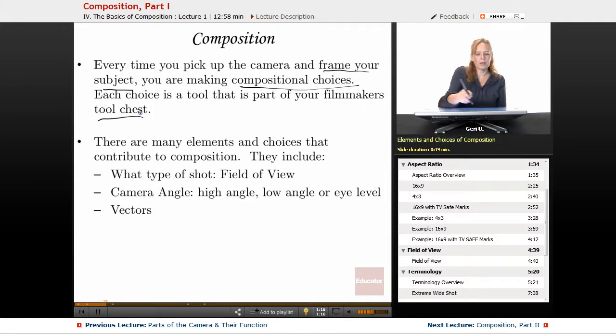There are many elements and choices that contribute to composition. They include primarily what type of shot, which is called field of view, how close or far an image is, the camera angle if it's high, low, or eye level, and what we're going to define as our vectors within the frame.